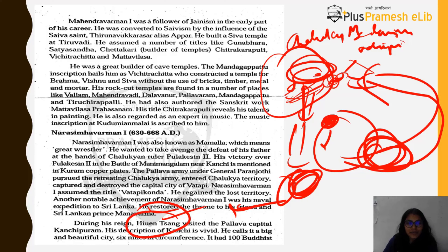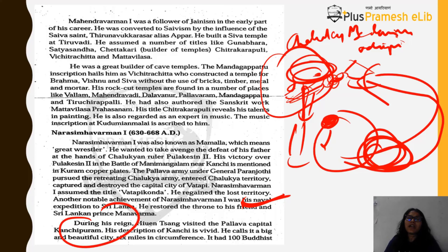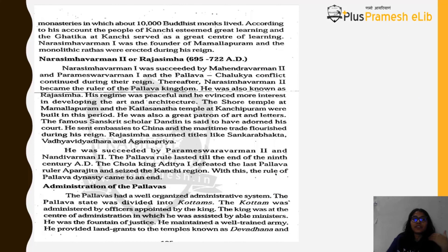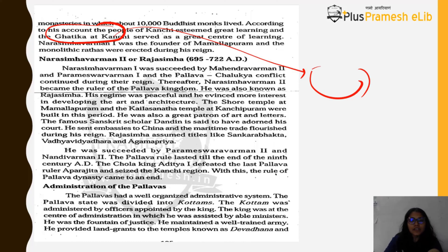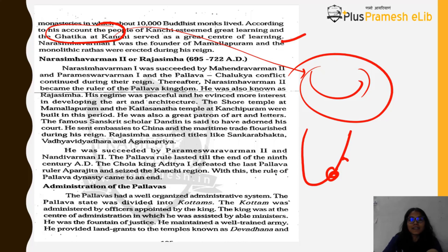During Narasimha Varman I's reign, Xuanzang (Hyun Sang) — who visited India around 630–635 AD — also visited the Pallava capital Kanchipuram, not just Harsha's court. Xuanzang describes Kanchi very vividly: a big and beautiful city with a circumference of 6 miles, with 100 Buddhist monasteries in which 10,000 Buddhist monks resided. According to his account, the people of Kanchi esteemed great learning, and the Ghatikas (centers of study) at Kanchi attracted students from across India and abroad.